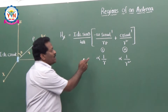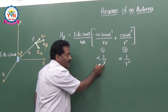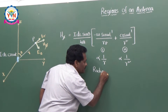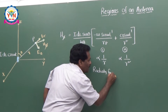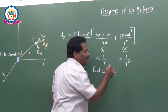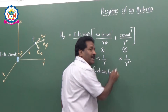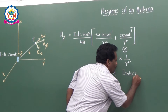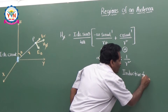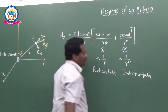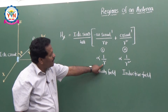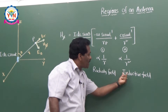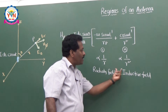The term which is inversely proportional to distance R is called the radiating field. The term inversely proportional to R² is called the inductive field. So this first term is the radiative field, and the second term is the inductive field — these are the two fields we have.